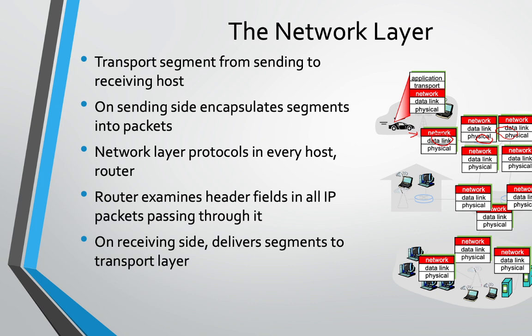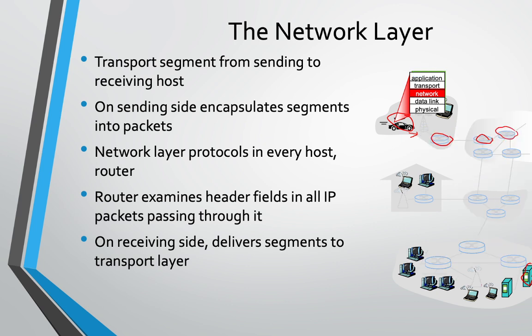The basic function of the network layer is to determine the path and send the packet. So the router determines which path to take — which path will ultimately get the packet to its destination. That is why all the intermediary devices, especially routers, work only up to the network layer. They do not require the transport layer or application layer.